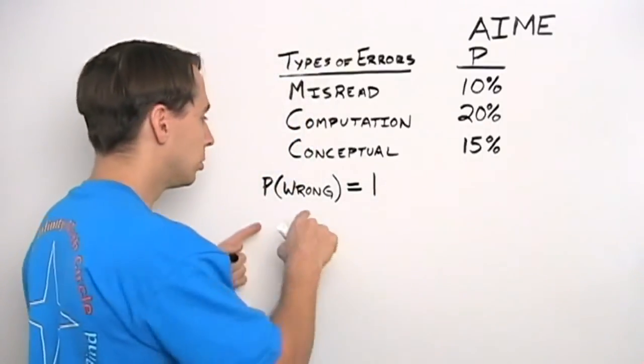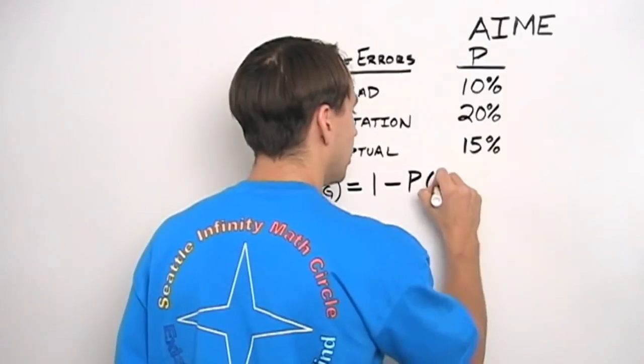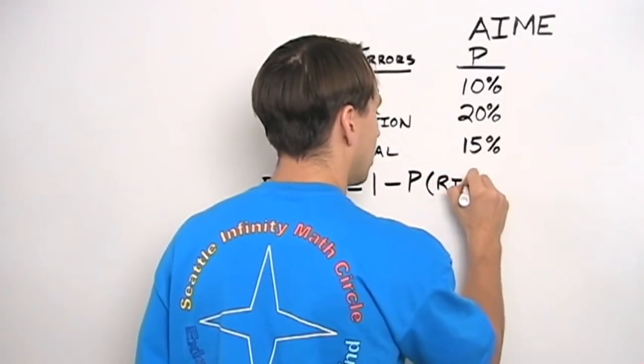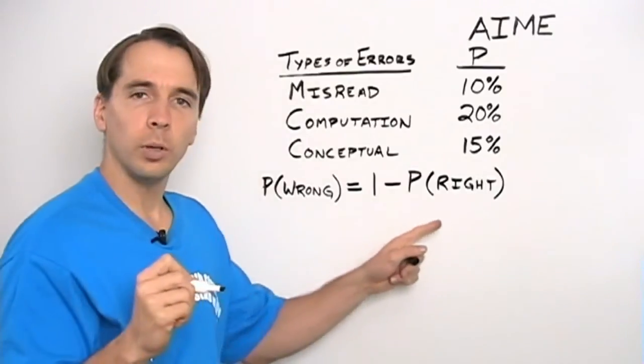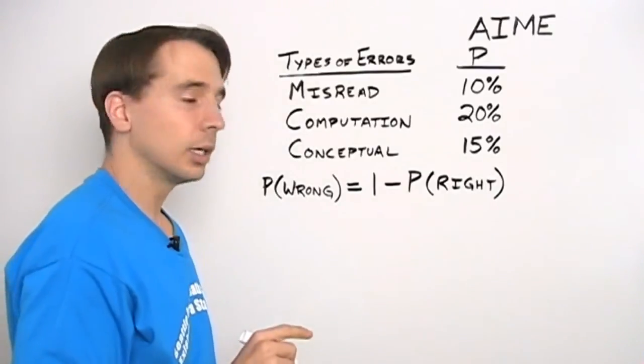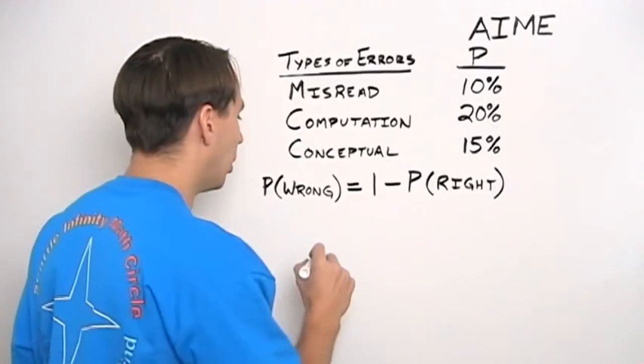I'm either right or I'm wrong. So the probability that I'm wrong, plus the probability that I'm right, add up to one. So the probability that I'm wrong is one minus the probability that I'm right. And if I can figure out the probability that I'm right, well then I can figure out the probability that I'm wrong.